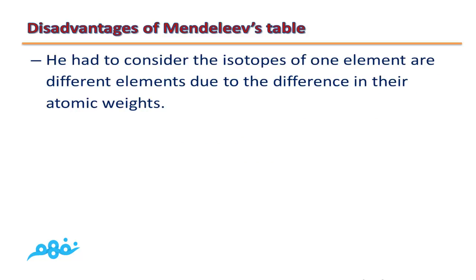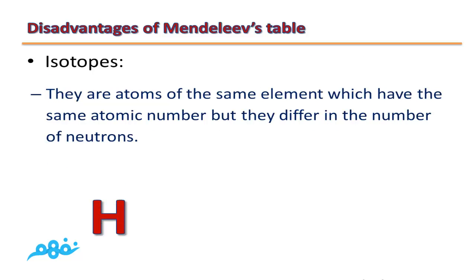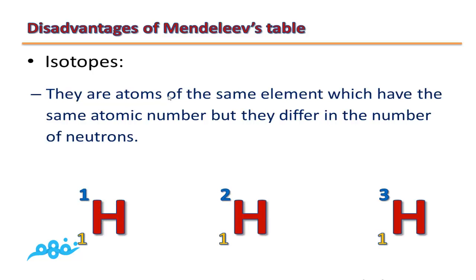The second disadvantage is that Mendeleev had to consider the isotopes of one element as different elements, due to the difference in their atomic weights, causing him to put more than one element in each cell. Isotopes are atoms of the same element which have the same atomic number - for example, all hydrogen isotopes have atomic number 1 - but they differ in their number of neutrons, so their mass number differs from one isotope to another.